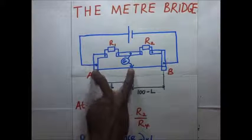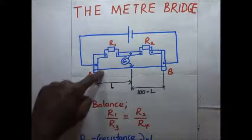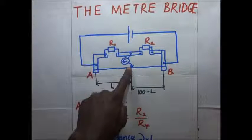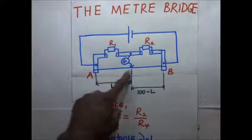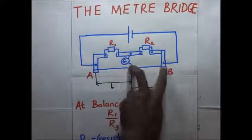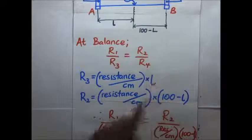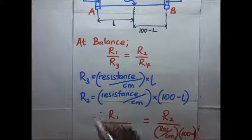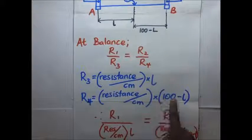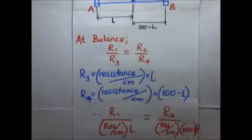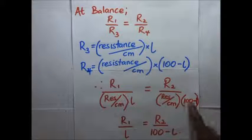To find R3, we know the length of the wire, so we find the resistance per unit length — the resistance per centimeter — and multiply it by the length of the wire. R3 equals resistance per centimeter multiplied by the balance length L. Similarly, R4 equals resistance per centimeter multiplied by 100 minus L. So the equation becomes R1 divided by (resistance per centimeter × L) equals R2 divided by (resistance per centimeter × (100 minus L)).